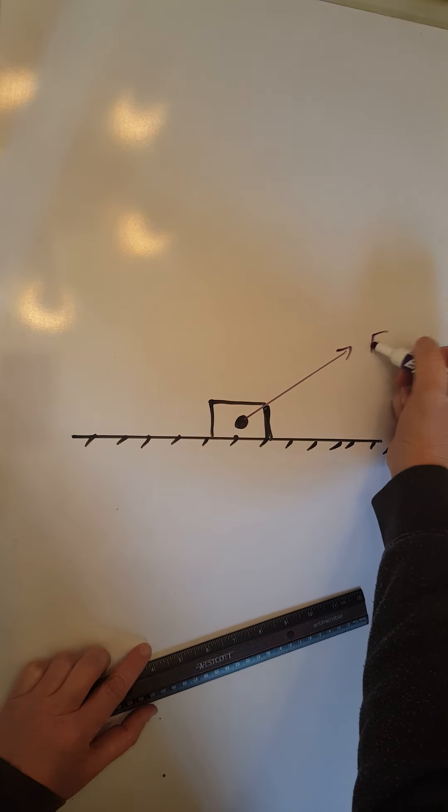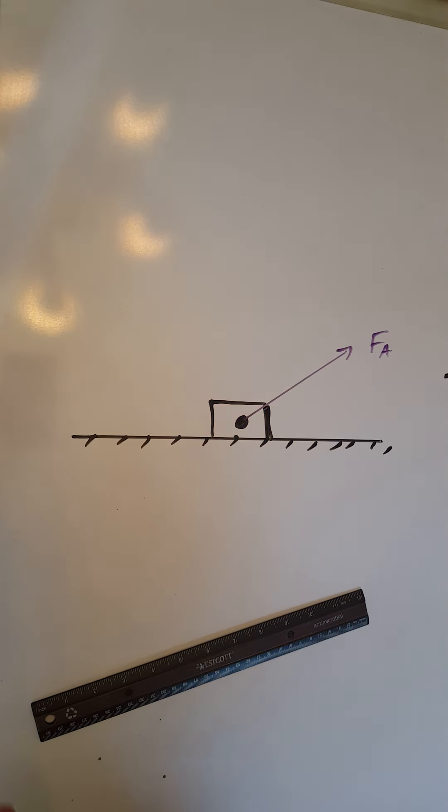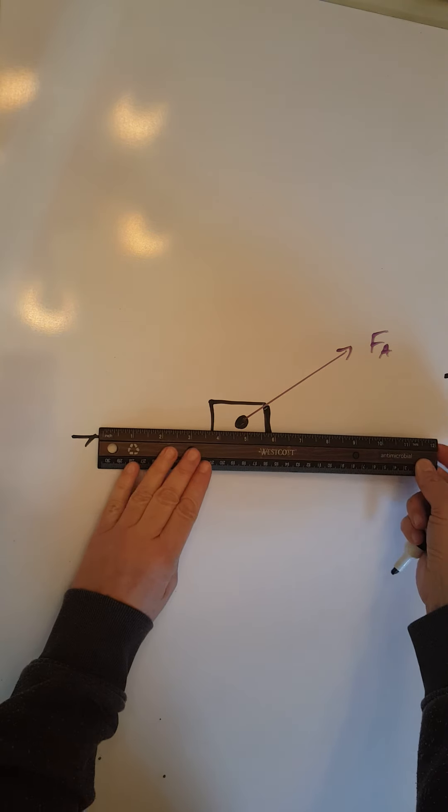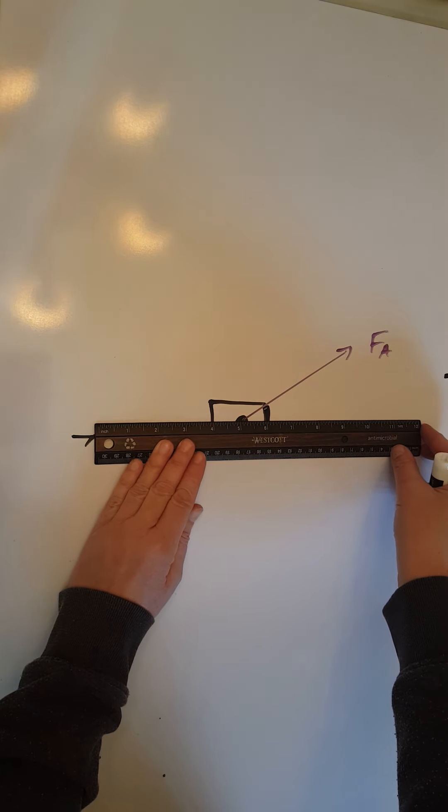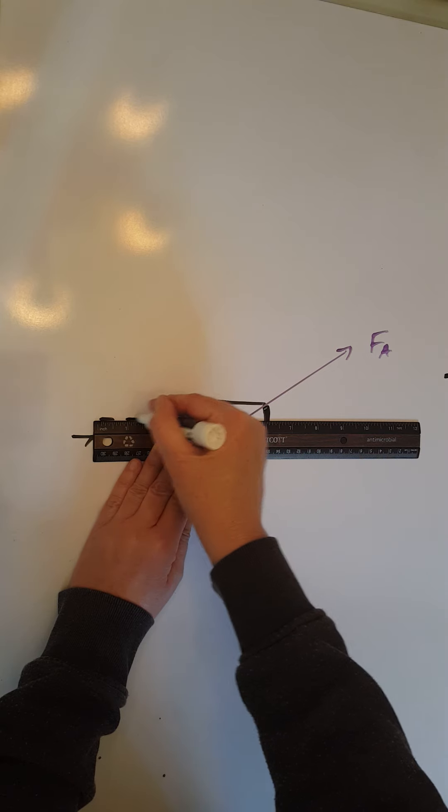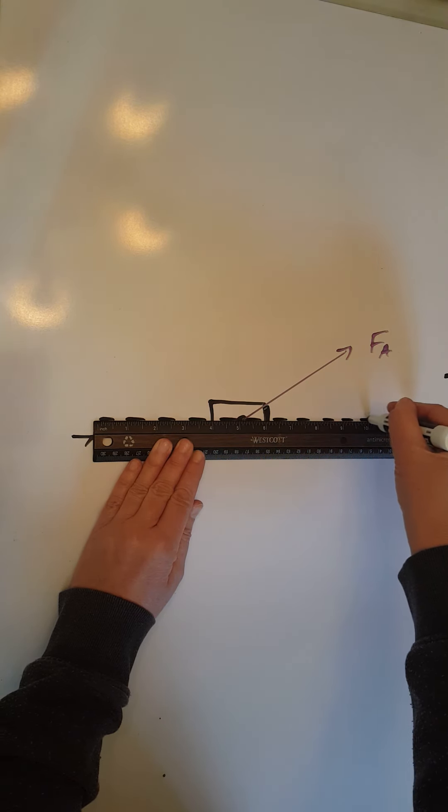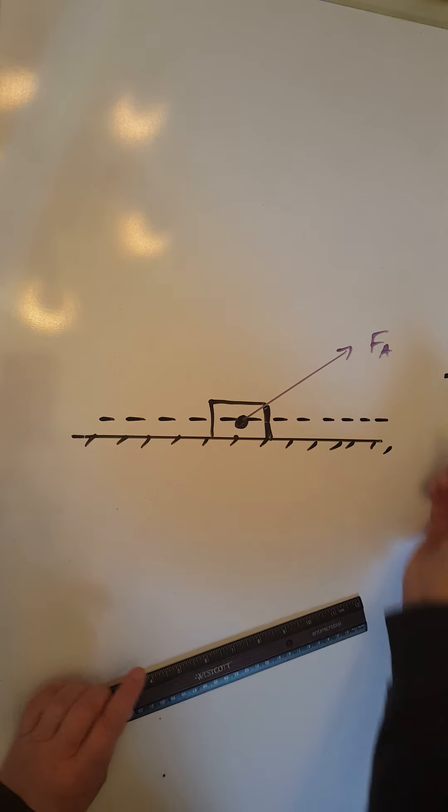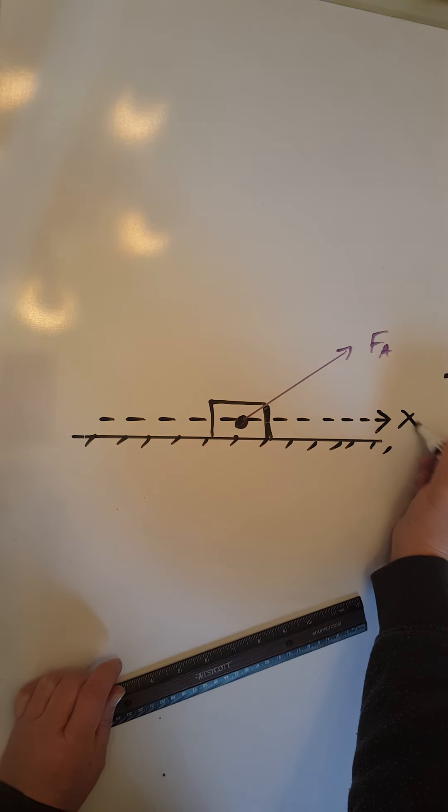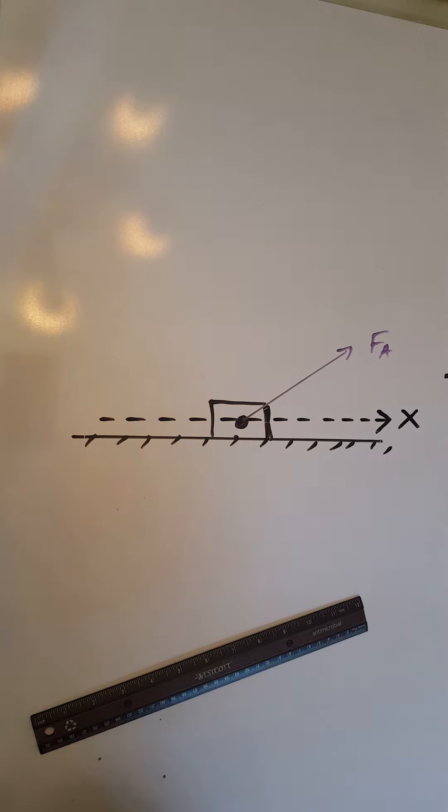Let's say that's F A, and this force will make an angle theta with the horizontal. How are we going to show that angle? Well, we are going to draw a helping x-axis through the center of the object. Helping lines must always be dotted. There we go. We're going to label that x as in the x-axis.